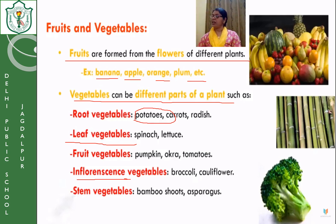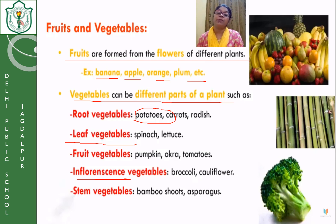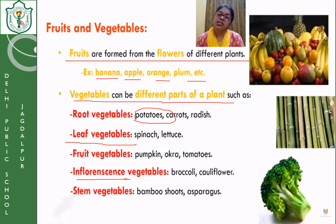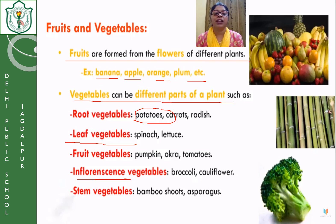In your book on page number 9, you can see different types of fruits and vegetables listed for your reference, along with which part of the plant they are. If anyone asks you: ginger is the stem part of the plant; turnip is the root part of the plant; pea is the seed part of the plant. So we eat different parts of the plant as our food in the form of fruits and vegetables.